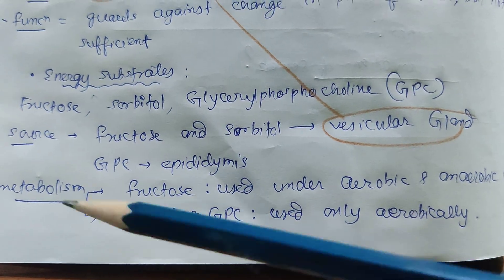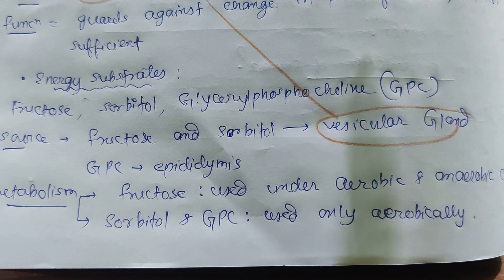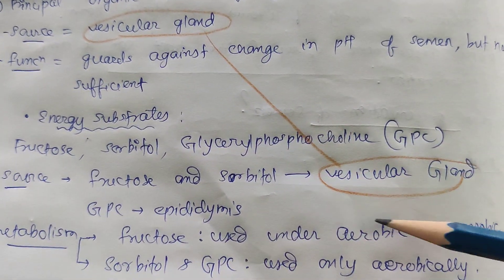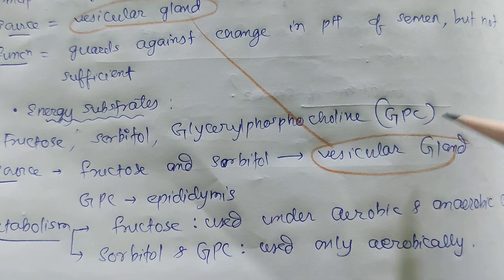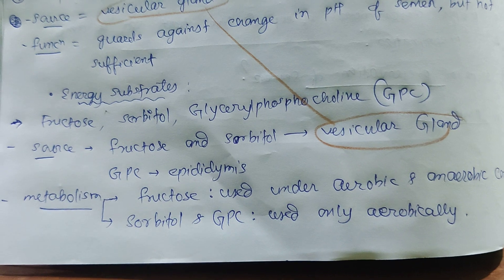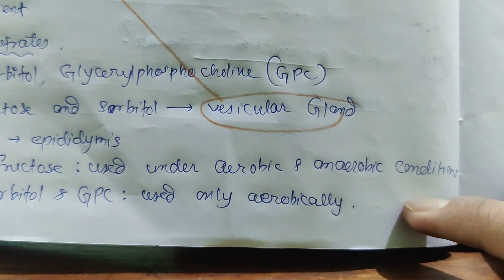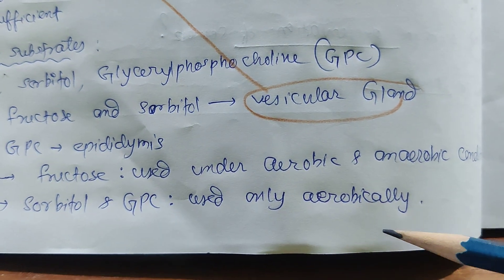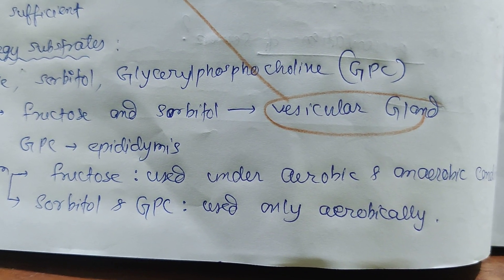The source of fructose and sorbitol is the vesicular gland, which also secretes bicarbonate. GPC is produced by the epididymis. Fructose is metabolized under both aerobic and anaerobic conditions, whereas sorbitol and GPC are used only aerobically.